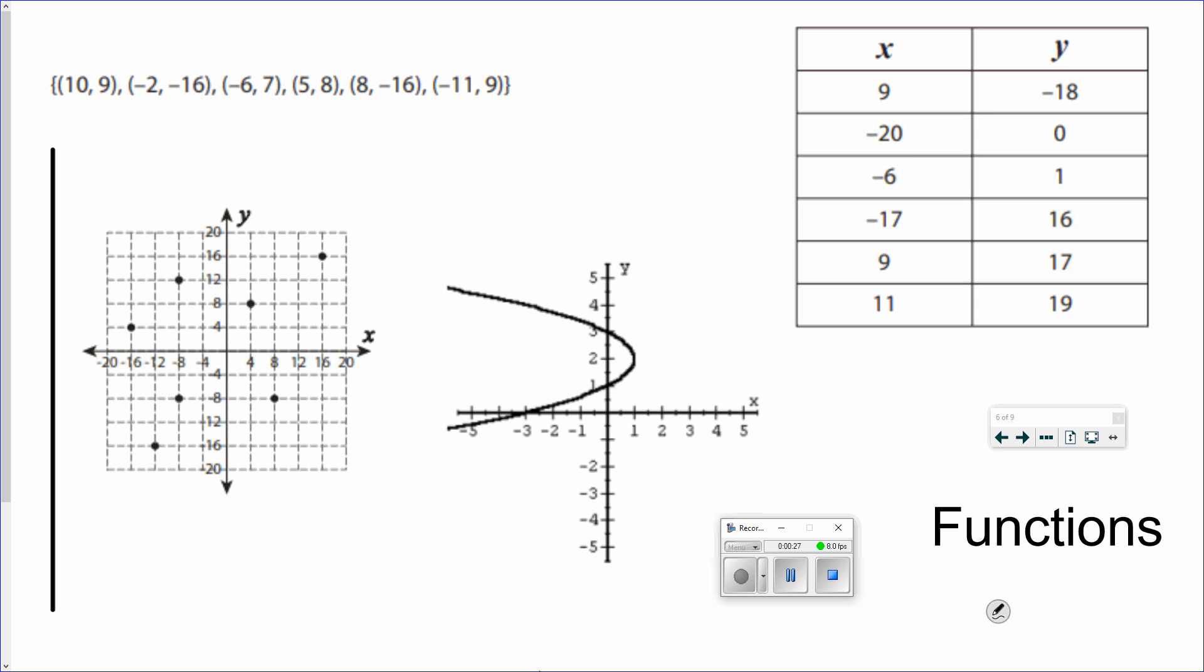So I'm going to start up here on the top row, with the first one. What I'm looking for is my inputs, my domain. Domain is inputs, and my output is called my range. So essentially you want to think of it as your x and your y. When you're looking for functions, you're really not worried about the range, you're looking at the domain. So I'm going to be looking to see if any of those x values are repeated. And 10, negative 2, negative 6, 5, 8, negative 1. So there's no repeated x values, so this one is a function.